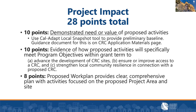Project Impact is worth 28 points total. For 10 points, we look at the demonstrated need or value of proposed strategies and activities, including demonstration of building both climate resilience and community resilience through anticipated project benefits and outcomes. For this section, you will need to provide a baseline using CalAdapt's local climate change snapshot tool to provide information on your site or sites — we have a guidance document for this on the application materials page. Include the CalAdapt information but also layer in any additional relevant local data to understand the context of your community in terms of climate risks, exposures, and adaptation and resilience measures.